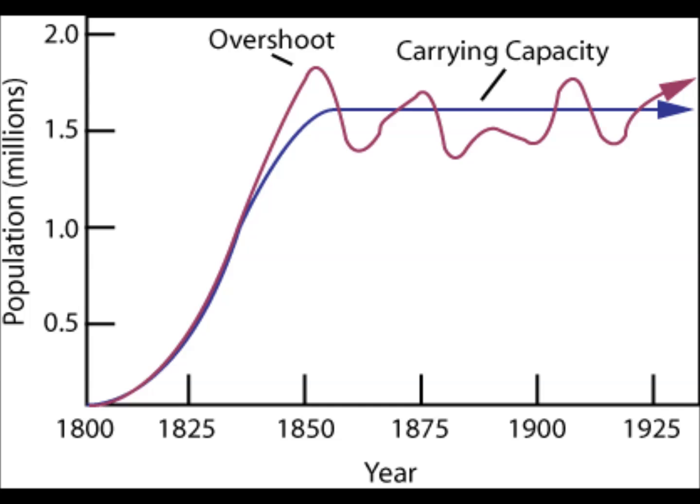In this graph, carrying capacity is represented by the blue line. The population is represented by the red line. You can think of it like a sponge — a sponge can only soak up so much water before it can't soak up anymore. A habitat can only allow for so many individuals to live there.